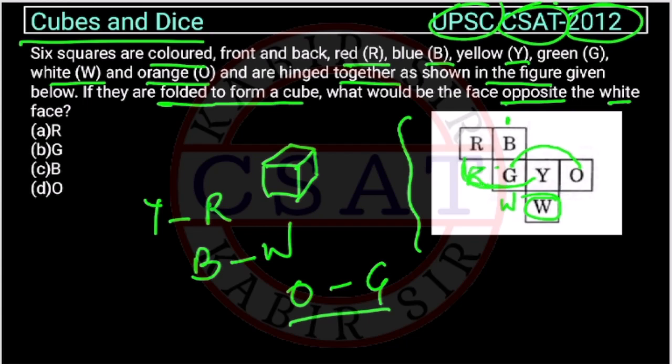Y and R will be opposite to each other, and B and W will be opposite to each other. Right. So both are the same thing.